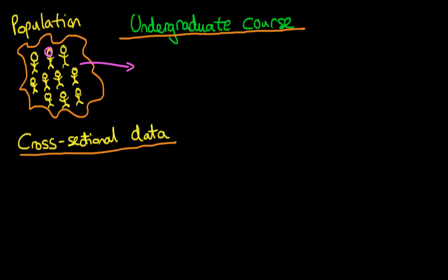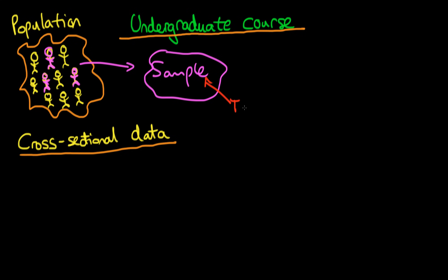We only have a sample from that population, so perhaps we have just these figures which I'm highlighting here in purple, and these individuals form a sample data set. The idea with econometrics is that we want to use some statistical or mathematical tool on that sample to enable us to make some inference about what's going on in the population, or to make some estimation of a population parameter.